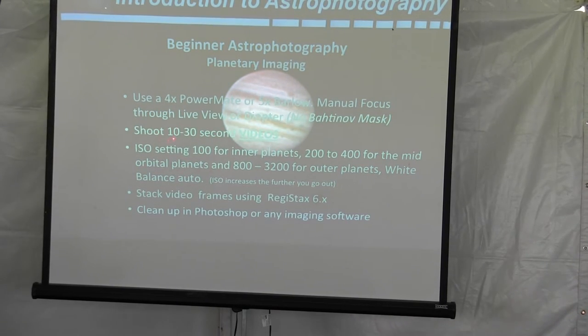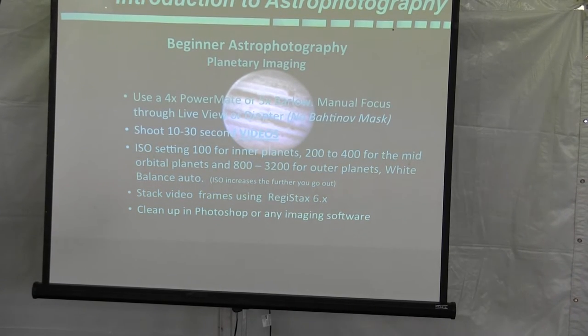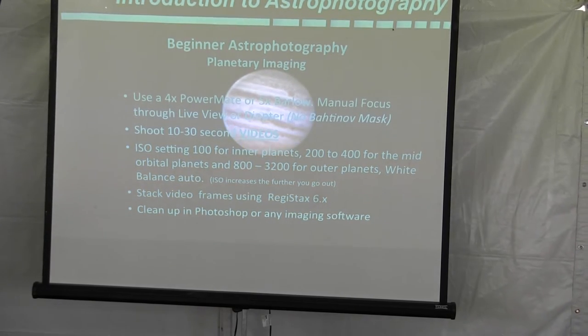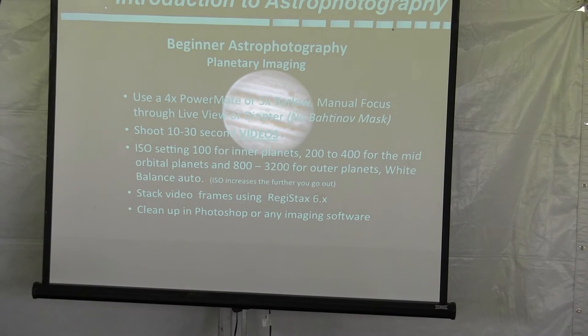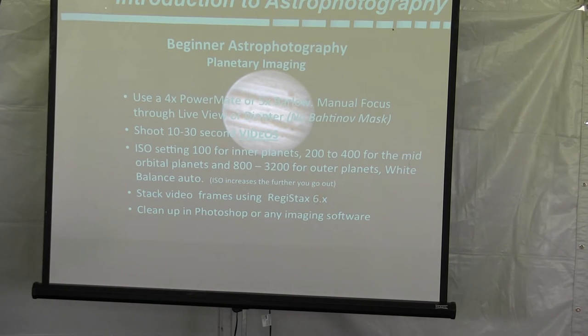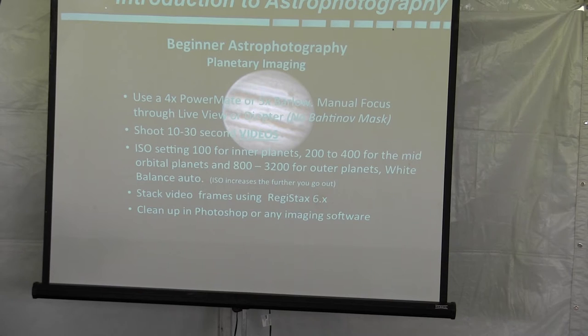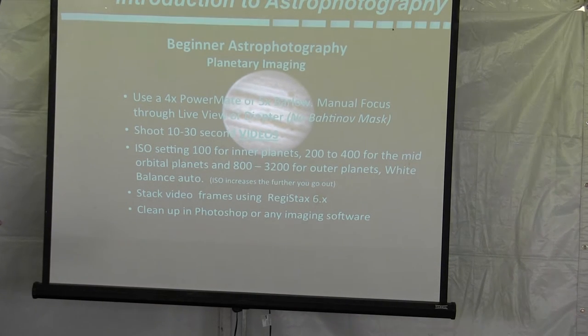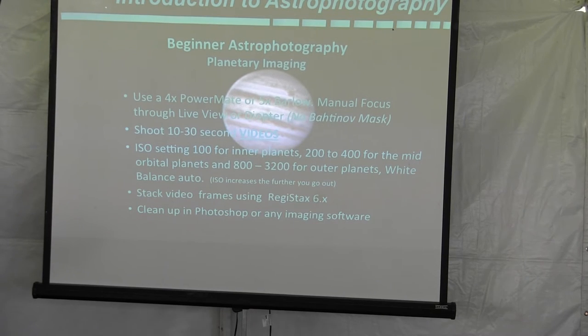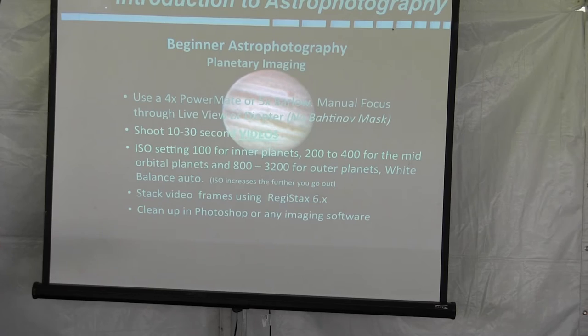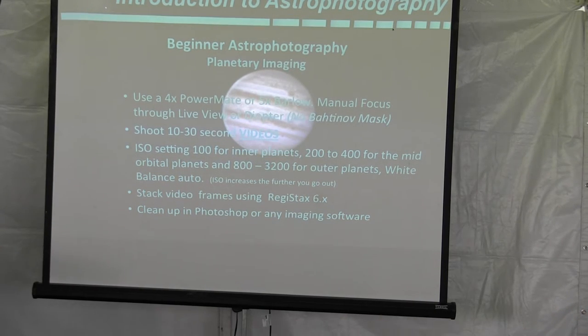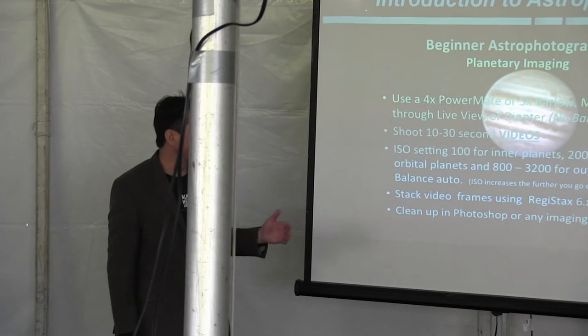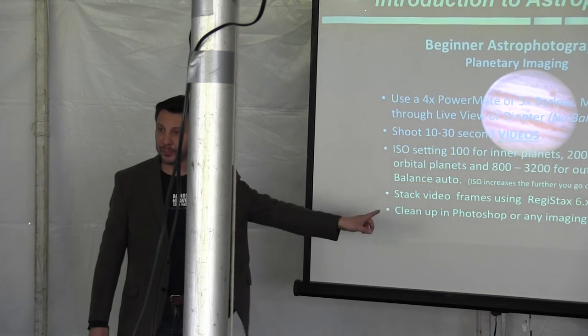You want to shoot videos for 10 to 30 seconds. How do you image a planet? You need to use an application called Registax. I think the latest version is 6.02. What that allows you to do is take your video, and it actually will lay out the frames, and then you select what you see as the best frame. Then it will take all subsequent frames of the video and stack them from best to worst. You say, get rid of this 75%, keep this 25% of good frames and stack them.